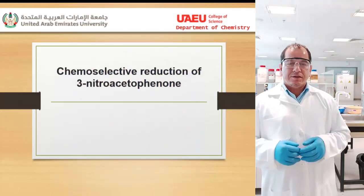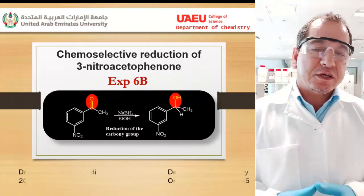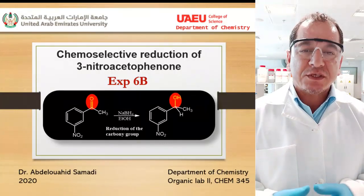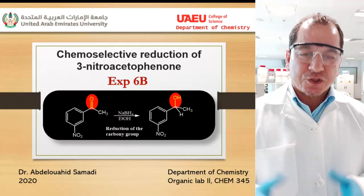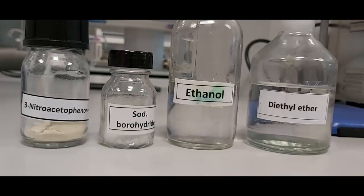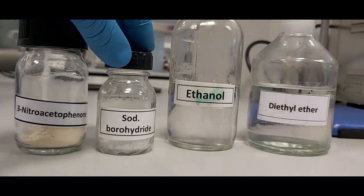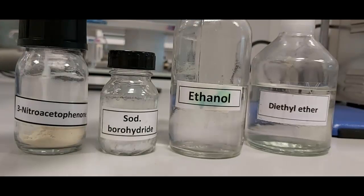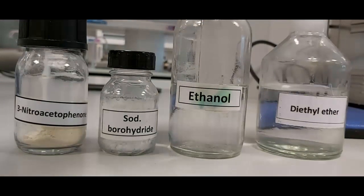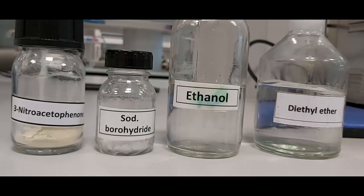Hello everybody, today we will continue the second part of experiment six: chemoselective reduction of 3-nitroacetophenone by using sodium borohydride, NaBH4. For this reaction we need 3-nitroacetophenone, sodium borohydride, and as solvents we need ethanol and diethyl ether.